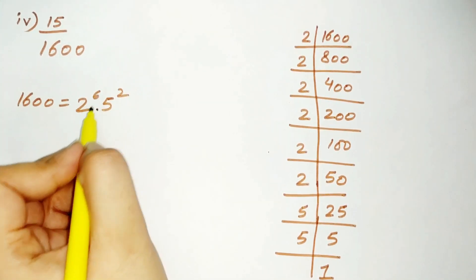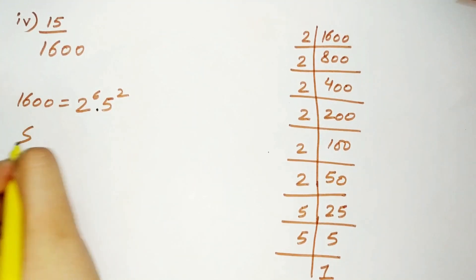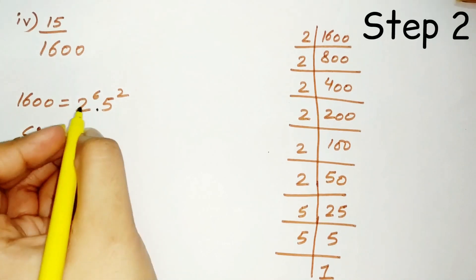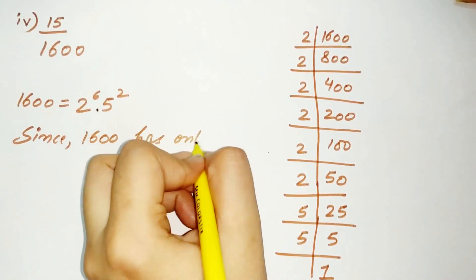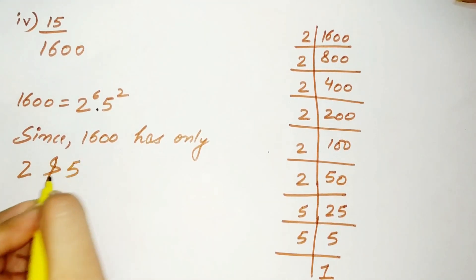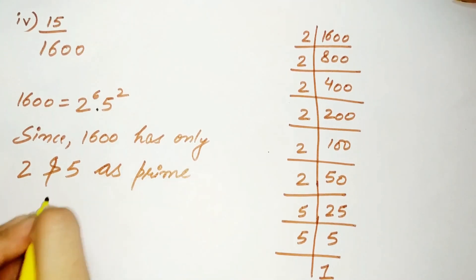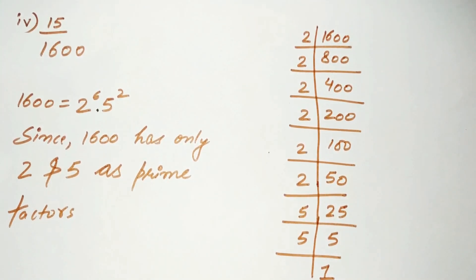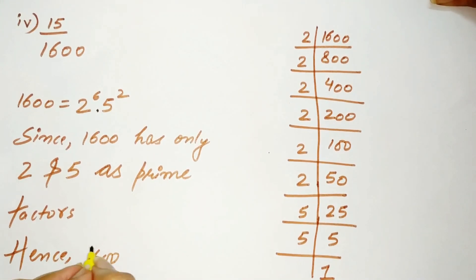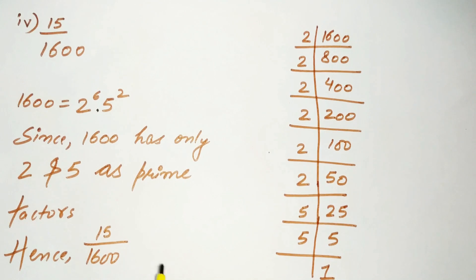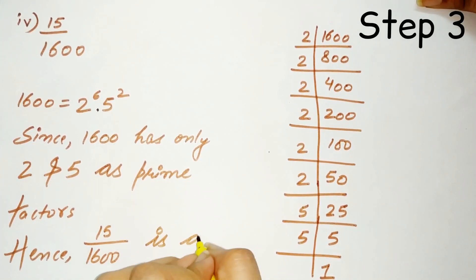That means 1600 equals 2 raised to the power 6 multiplied by 5 raised to the power 2. Since 1600 has only 2 and 5 as prime factors, hence 15 divided by 1600 is a terminating decimal expansion.